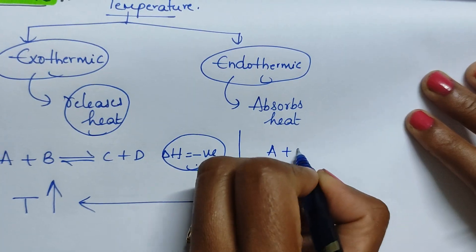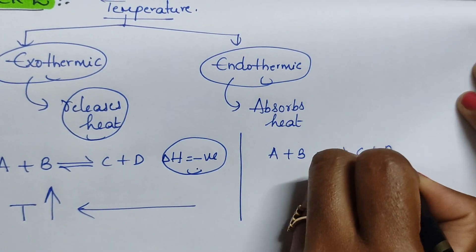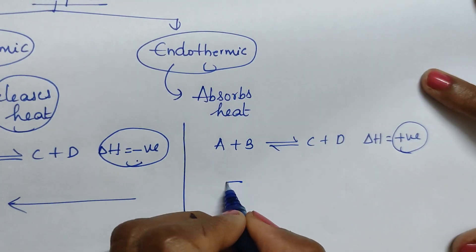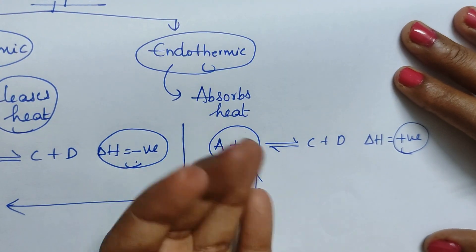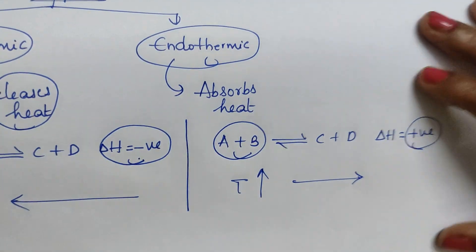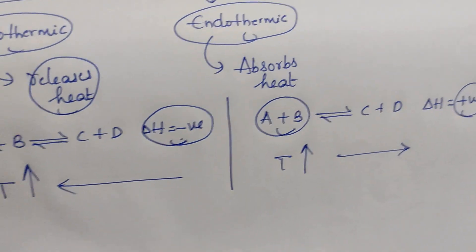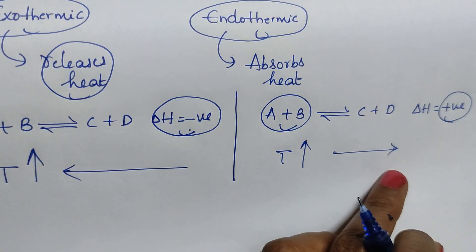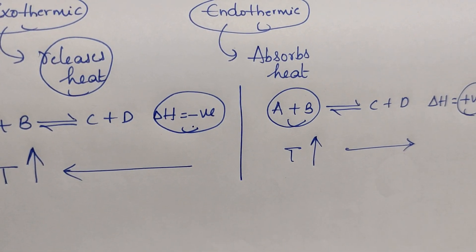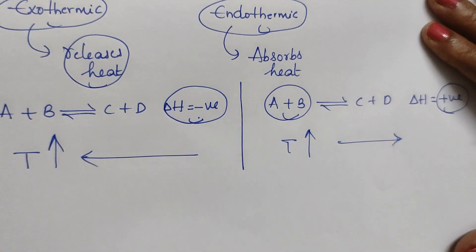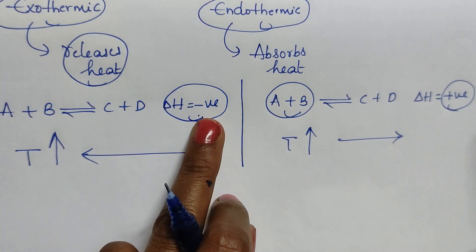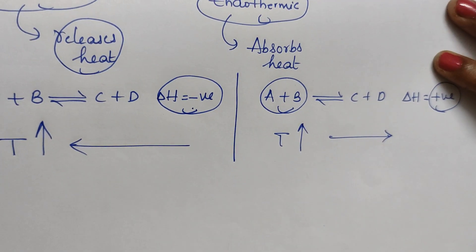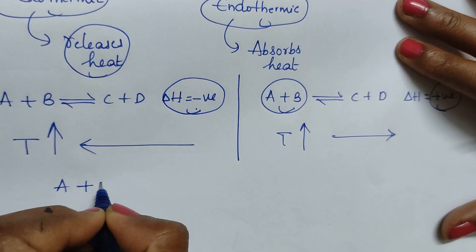If delta H is positive, the reaction needs energy, so it is endothermic. If you increase the temperature, reactants absorb energy and convert into products — the forward reaction takes place. To summarize: exothermic releases energy, so lower temperature is favored for forward reaction; endothermic needs energy, so higher temperature is favored for forward reaction.